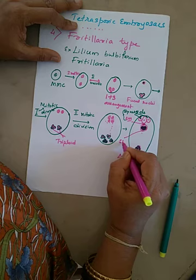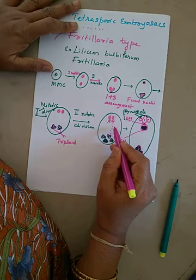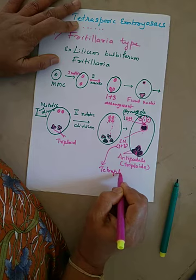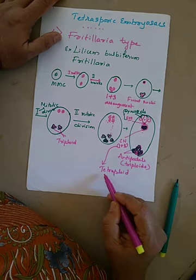The secondary nucleus becomes tetraploid because one haploid polar nucleus from the micropylar end fuses with the triploid chalazal structure: one plus three equals four. So the nature of the secondary nucleus is tetraploid. After fertilization, one haploid male gamete fuses with the secondary nucleus, making it pentaploid.